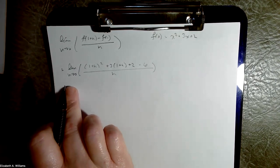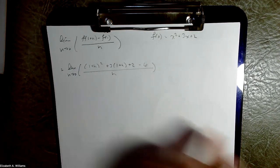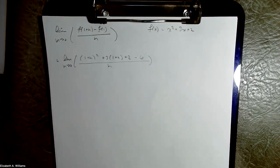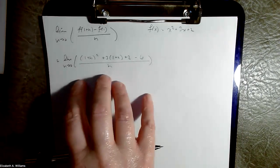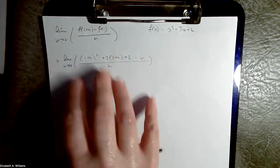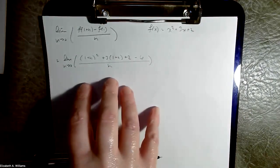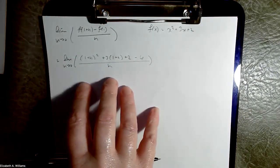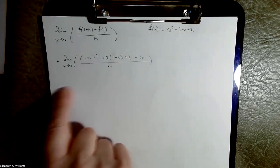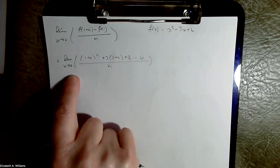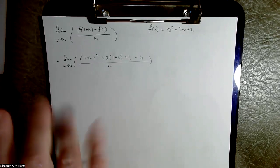Everything that they give you at GCSE or A-level — if you have to do it by first principles — the algebra will always come out nice. They will give you very well-behaved functions where it shakes out nicely and you can see by looking at it what the limit is going to be.